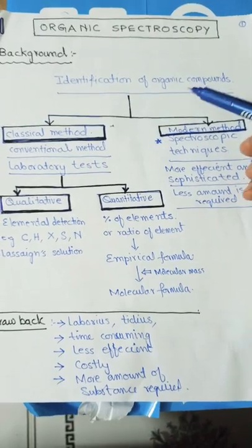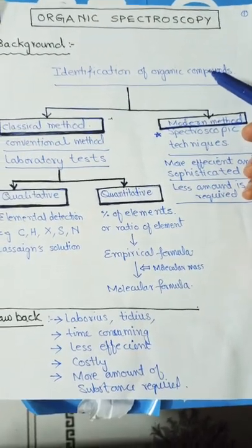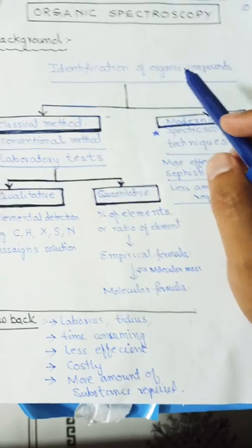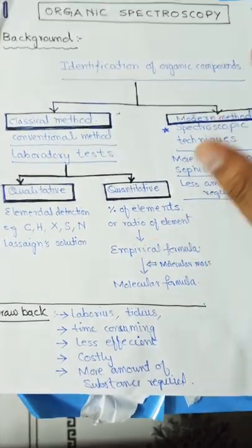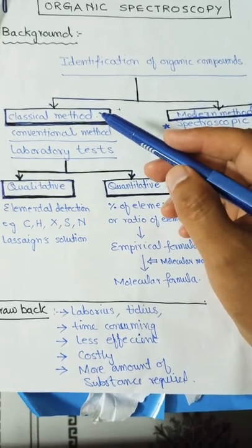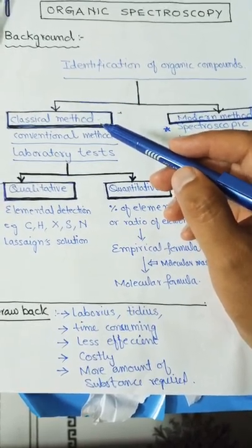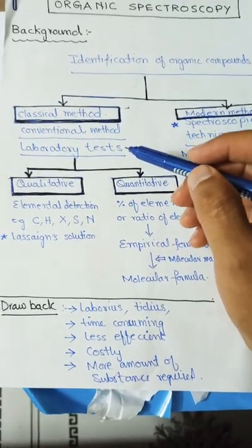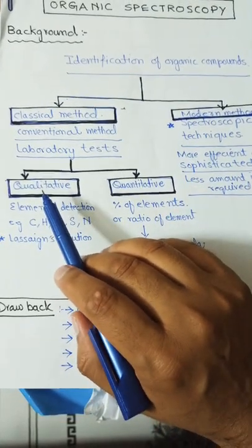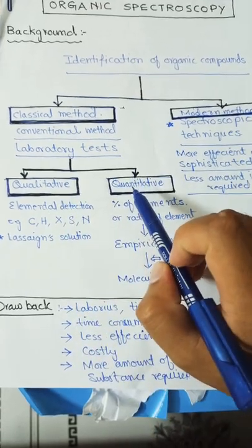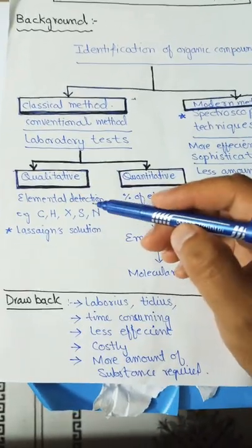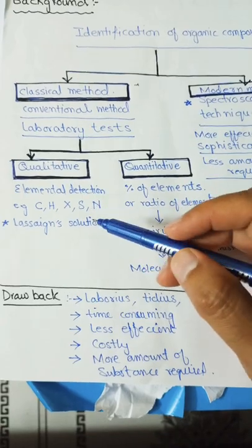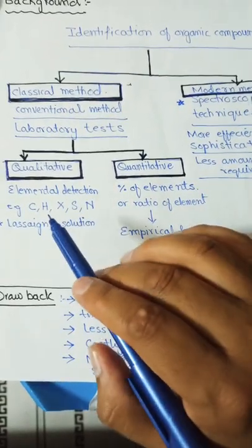First we should know what is the importance of organic spectroscopy. Organic spectroscopy is used to identify organic compounds. Before these spectroscopic techniques, there were classical methods by which we could identify organic compounds using different laboratory tests. There are two types of laboratory methods: qualitative and quantitative. In qualitative tests, we study elemental detection, like detection of carbon, hydrogen, halogens, sulfur, or nitrogen.